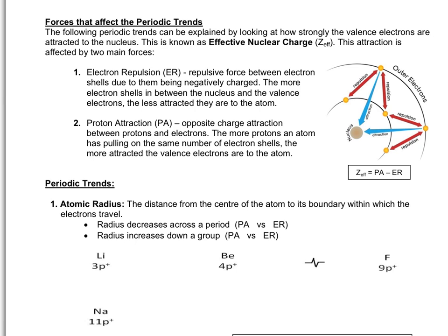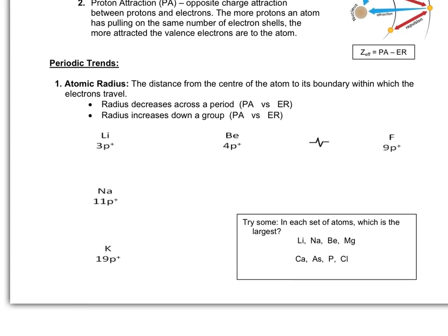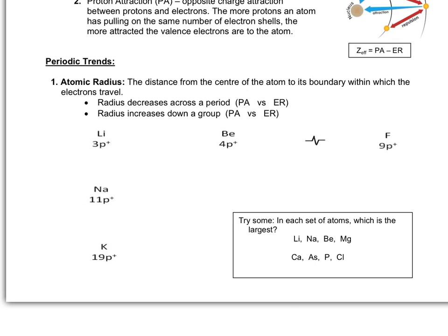So, let's look at the atomic radius. Radius is defined as the distance from the center of the atom to its boundary within which the electrons travel, so the outside valence shell. Now, before we discuss what's going on, let's draw a couple of Bohr diagrams. Here, I've drawn some modified Bohr diagrams, showing how many protons and where the electrons are in their shells. Pause the video here and complete the diagrams on your note.